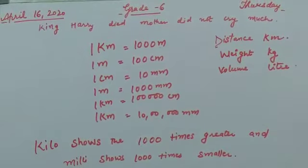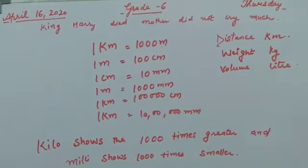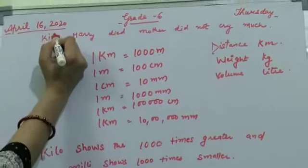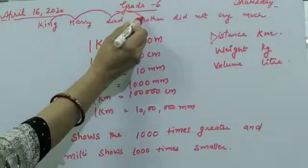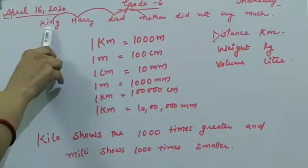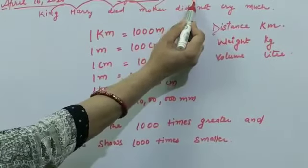One kilometer is equal to thousand meters. All of you have learned the table that when we go one step forward, it multiplies. One kilometer is equal to thousand meters. And one meter, one step.